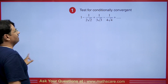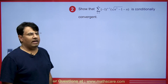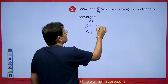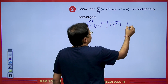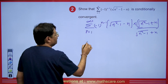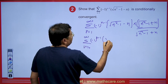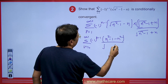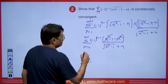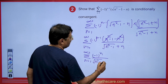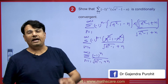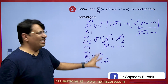Here is a question: n=1 to infinity of (-1)^(n-1) · (√(n²-1) - n), and you have to prove this is conditionally convergent. Whenever we have this kind of series, we rationalize it. We write (√(n²-1) - n) · (√(n²-1) + n) / (√(n²-1) + n). This is a difference of squares (a-b)(a+b), so the numerator becomes n²-1 - n² = -1, divided by √(n²-1) + n. The n² terms cancel, giving us (-1)^n / (√(n²-1) + n). This series is decreasing and u_n → 0 as n→∞, so by Leibniz's theorem this alternating series is convergent.